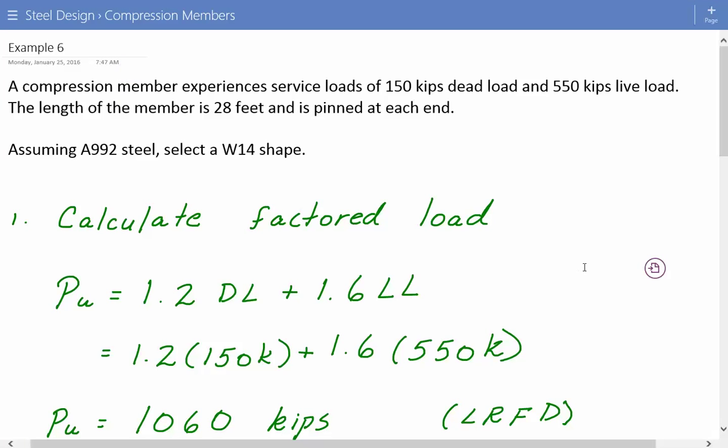Hey everybody, this is example number 6 in the steel design for compression members. The problem statement reads that a compression member experiencing service loads of 150 kips dead load and 550 kips live load. The length of the member is 28 feet and is pinned at each end.